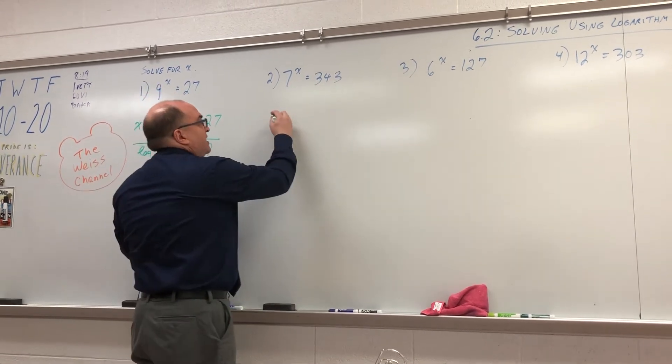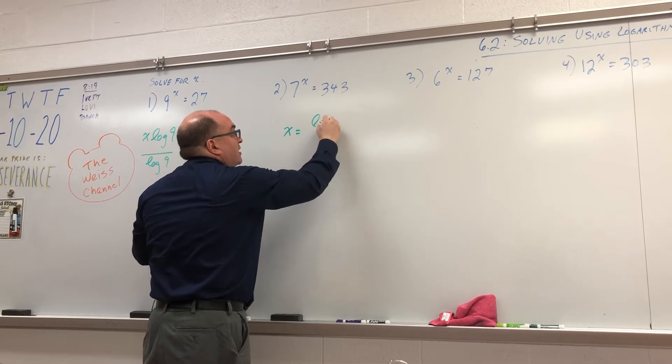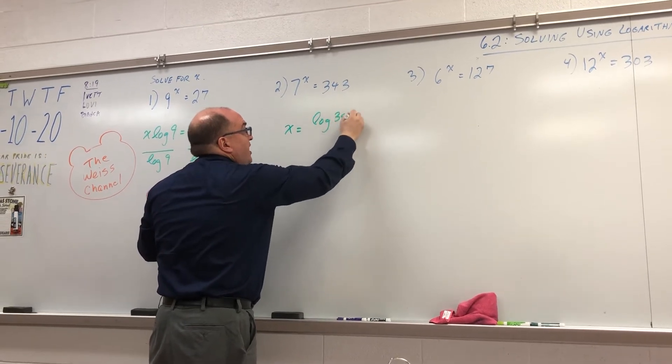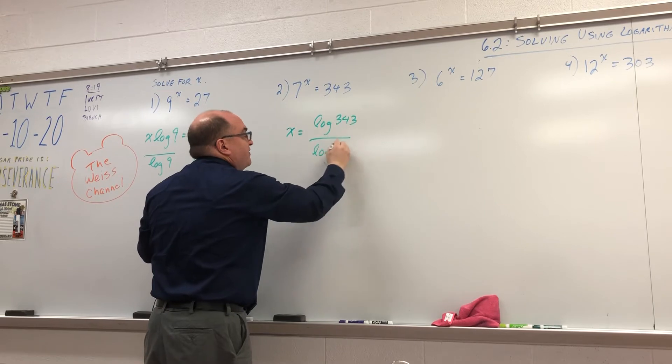So, what are we going to do here? X equals log 343 divided by log 7, right?